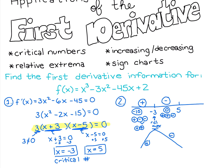To finish the sign chart, I'll test a number after 5, like 10. The first factor 3 is positive. Then 10 + 3 is positive, and 10 - 5 is positive. Three positives multiply to be positive. So the function switches from decreasing to increasing at the critical number x = 5, which means we have a relative min there.